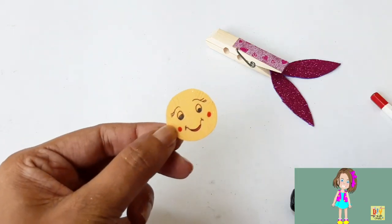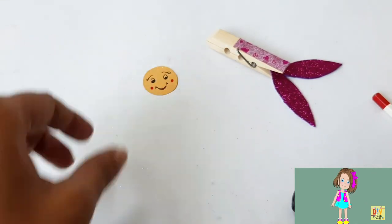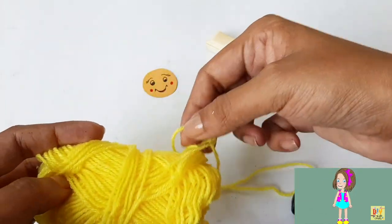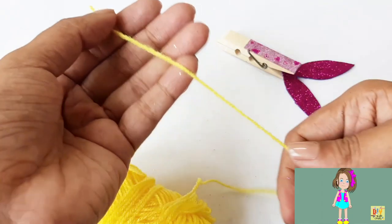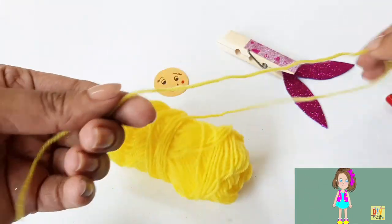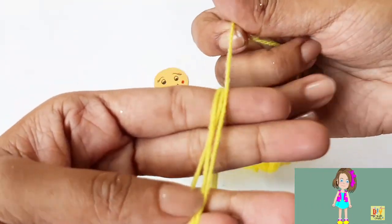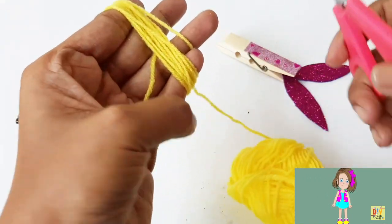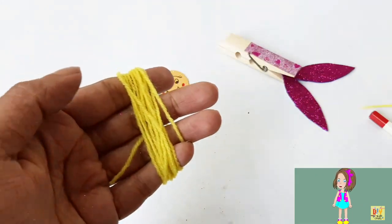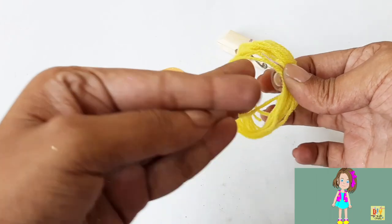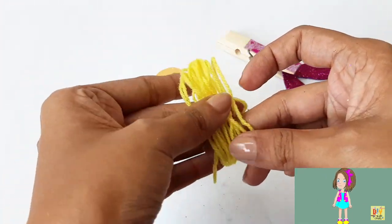This is gonna be our mermaid's face. Let's set it aside. I have here yarn, I chose color yellow, so just get enough portion. This is gonna be our mermaid's hair. Just cut.